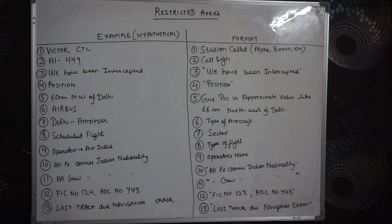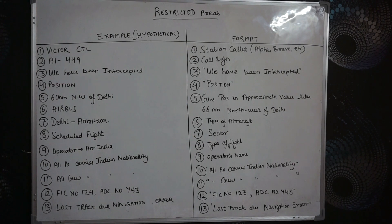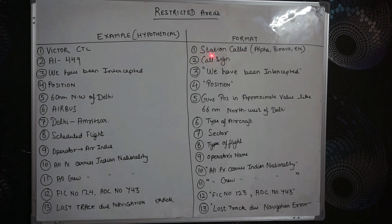I've written the format and example - this side is the format and this side is the example. First we'll see the format and then come down to the example. Turning to the format: first is the station called, which can be Alpha Bravo or any control, because in the restricted area, defense control is taking the authority and control of the traffic.